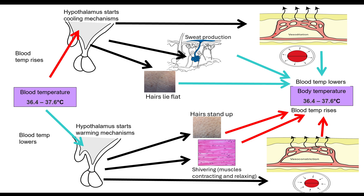Negative feedback is very important for thermoregulation — I have done a whole video covering this in more detail. Our blood temperature should be maintained between 36.4 and 37.6 degrees, a very narrow limit. If blood temperature rises, the hypothalamus starts a cooling mechanism and blood temperature is lowered back down. If blood temperature lowers, the hypothalamus starts warming mechanisms and blood temperature rises back up. We have reversed the stimulus — this is negative feedback, because the response is always opposite to the stimulus.